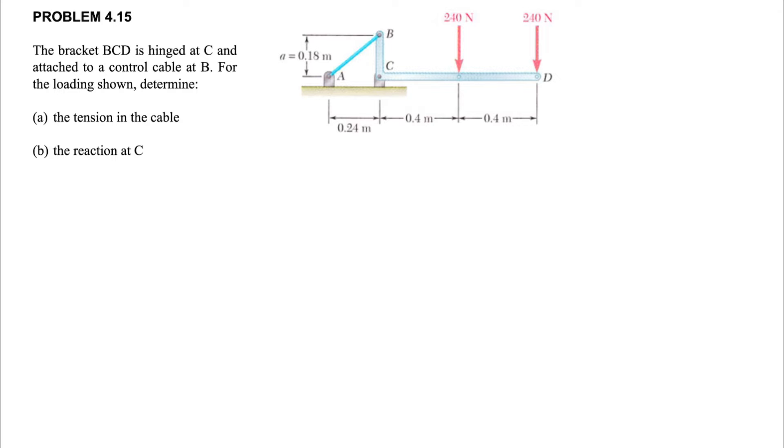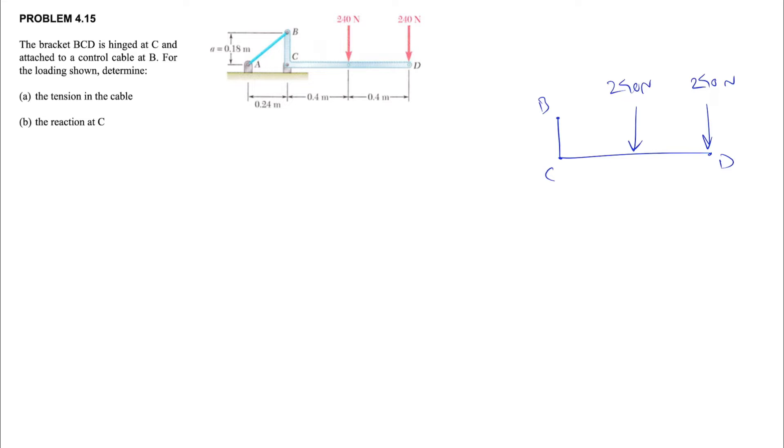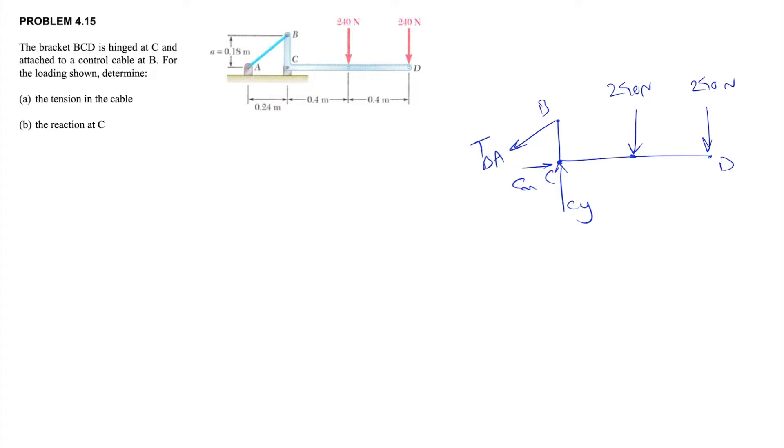As always, we're going to start with the free body diagram. We have two forces, 240 newton at D and another 240 newton force. At this point we have the tension in the cable, which will be TBA. We have at point C a pin which will be Cx and Cy. Since it's a pin it can rotate freely, so we won't consider any moment at point C.